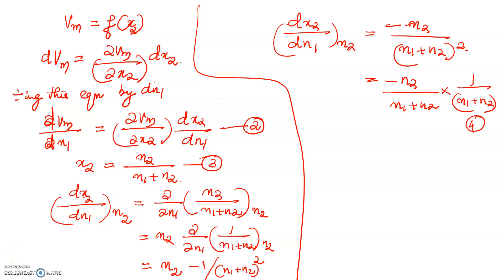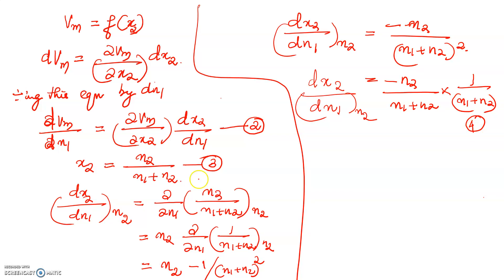We have been learning about determination of partial molar volume. We have derived the equation: ∂x₂/∂n₁ at constant n₂ is equal to minus n₂ by (n₁ + n₂) into 1 by (n₁ + n₂). Let this be equation 4. Now, equation 3 is x₂ = n₂ / (n₁ + n₂), so we have minus n₂ by (n₁ + n₂) here, and we can use equation 3 in equation 4.